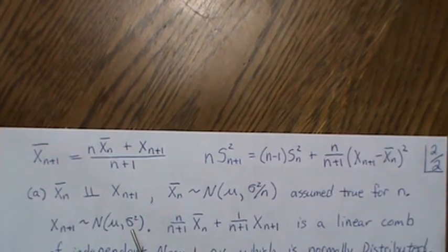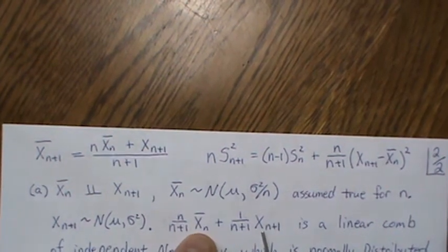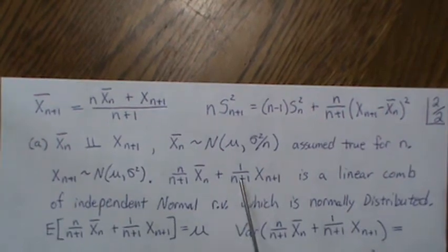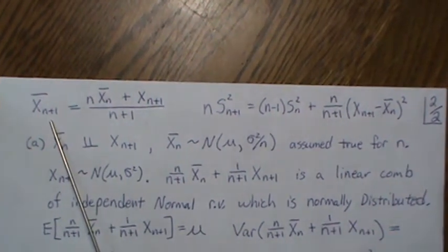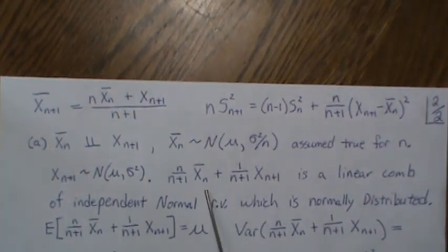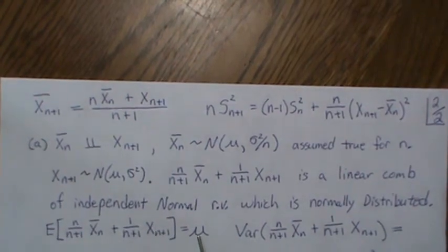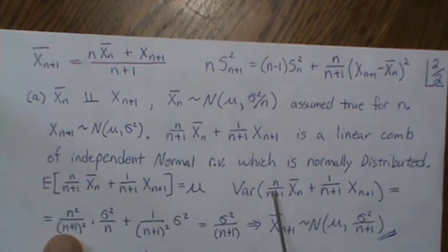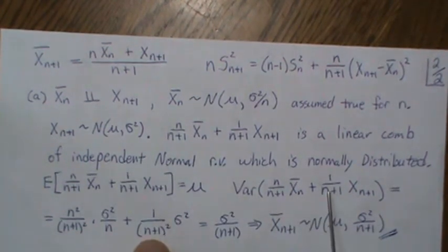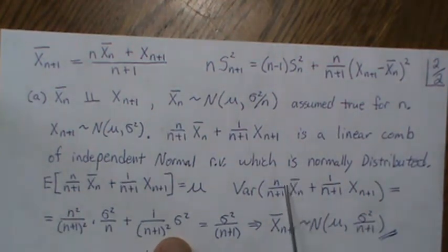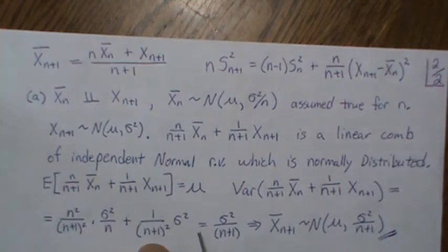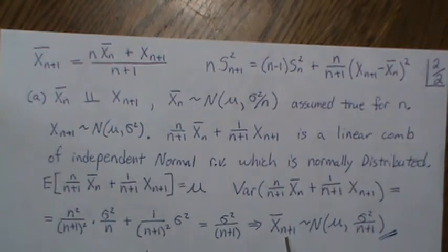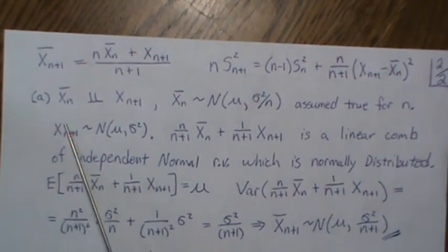X_{n+1} is from a normal distribution with mean mu and variance sigma². A linear combination of independent normal random variables is itself a normal random variable, and this linear combination is actually X_{n+1} bar. Taking the expected value gives us mu, and the variance — since the coefficients come out squared and the two pieces are independent (so no covariance term) — works out to sigma²/(n+1). So the sample mean of size n+1 is normally distributed with mean mu and variance sigma²/(n+1), satisfying part (a) of the theorem.